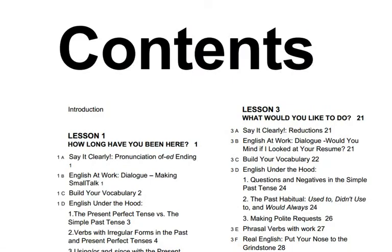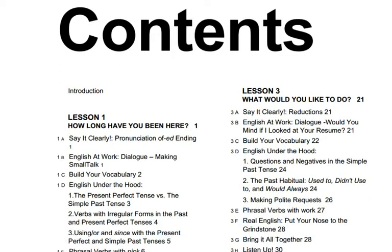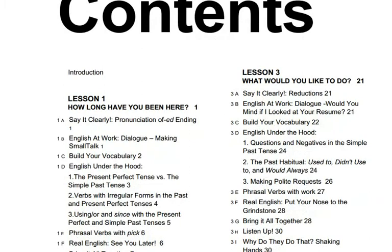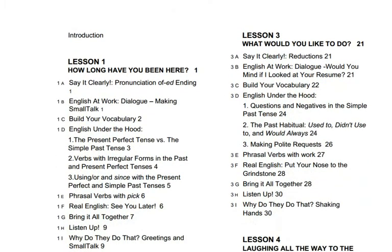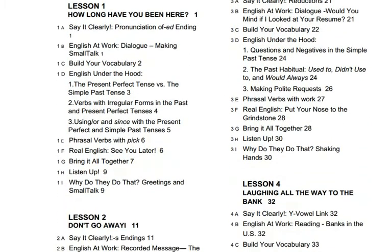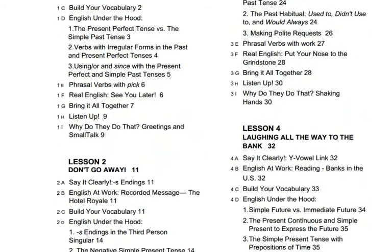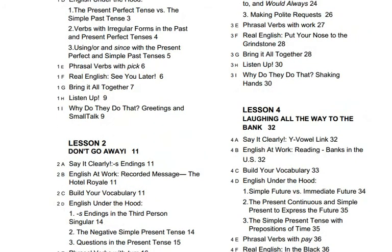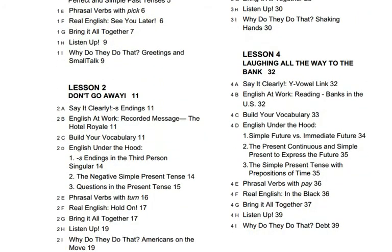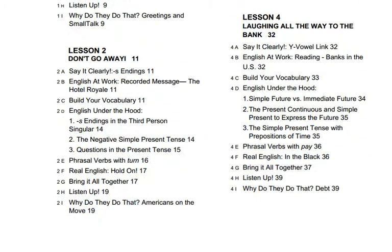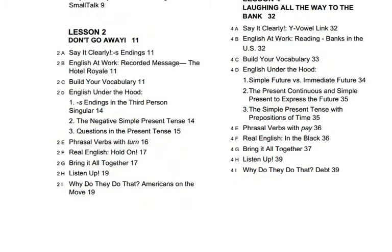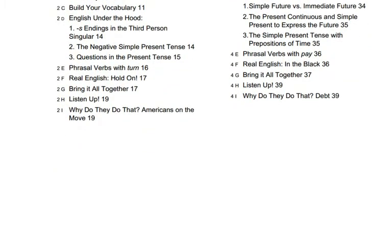16a. There are a few vowels in American English that cause a lot of trouble for many who want to improve their accent. One of those is 'a', as in cat. Here are a few examples. Lab. Have. Last. Pass.